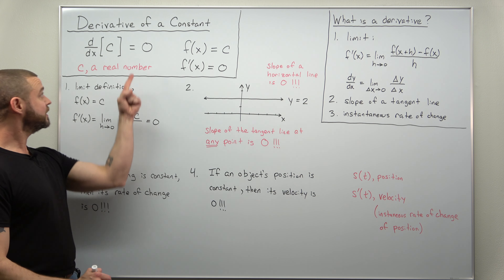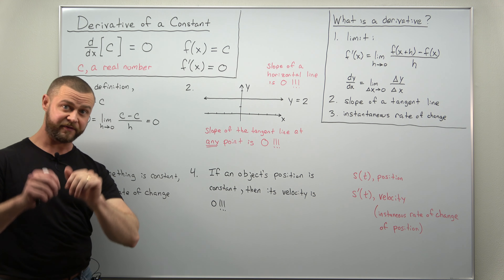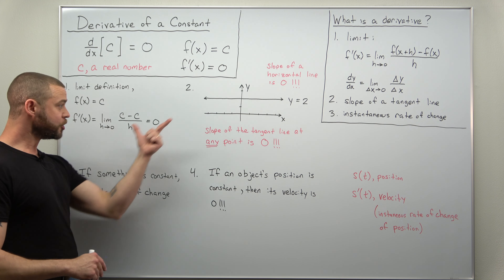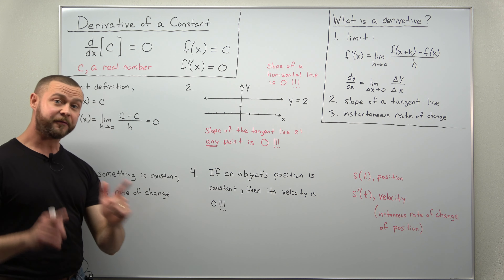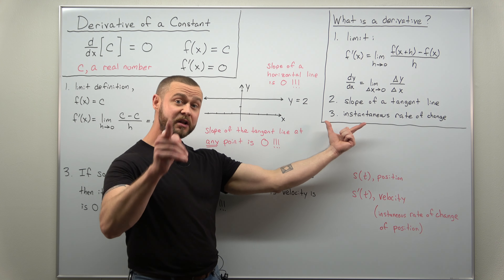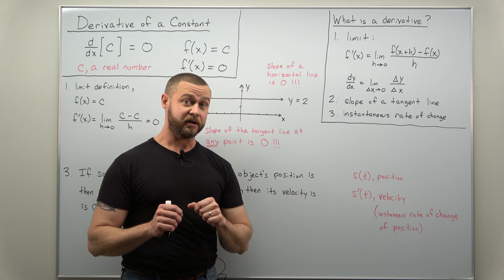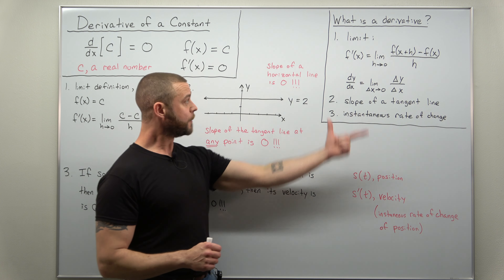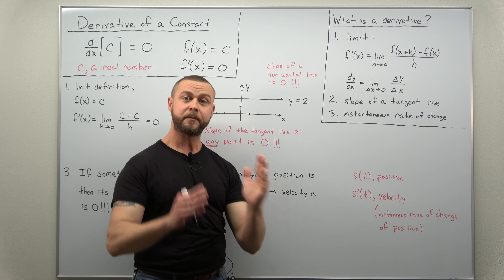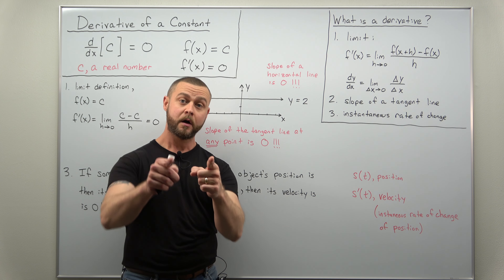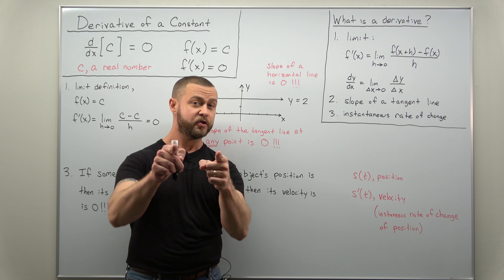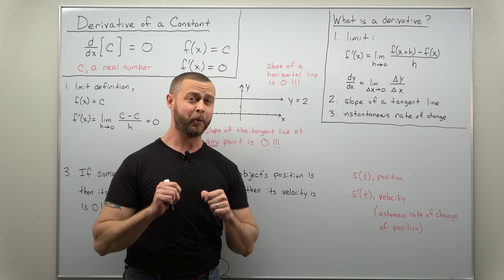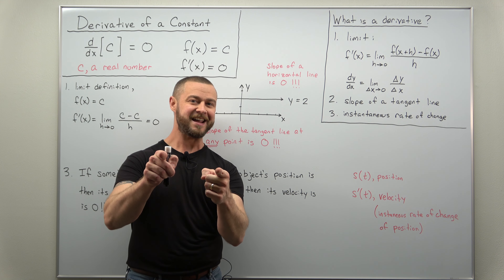The rule by itself is really simple — the derivative of any constant is 0 — but make sure you can understand it in these four different ways to really understand the foundation of calculus. As we continue through other videos, we're going to come back to understand derivatives in these different ways. Hope you enjoyed the video, short and to the point. Hope you're learning a lot — if you are, support the channel, like and subscribe.